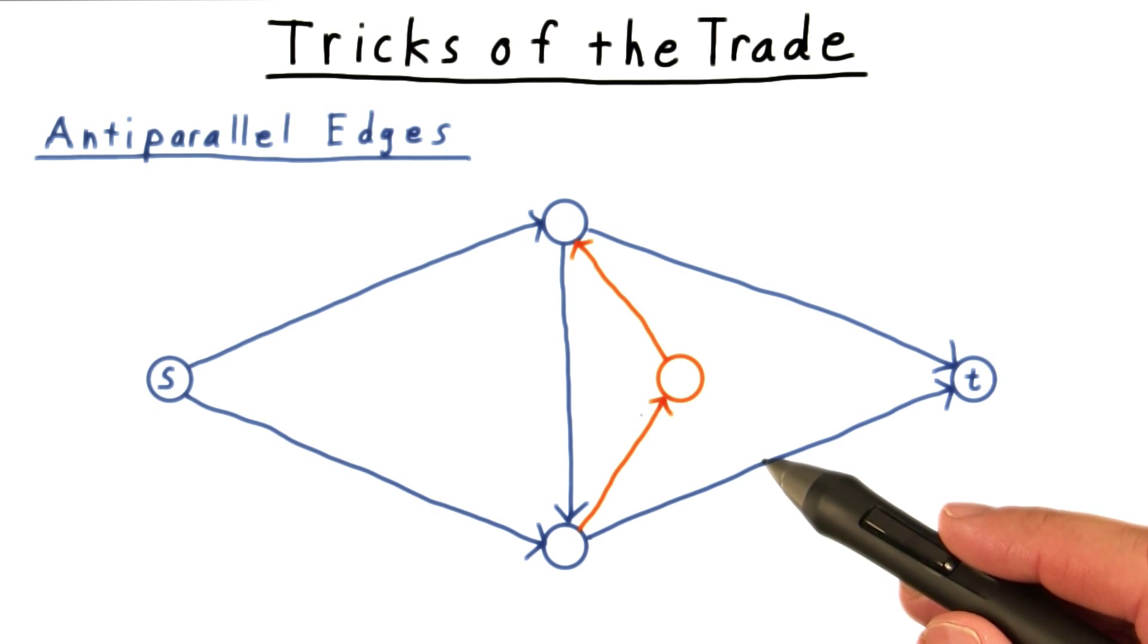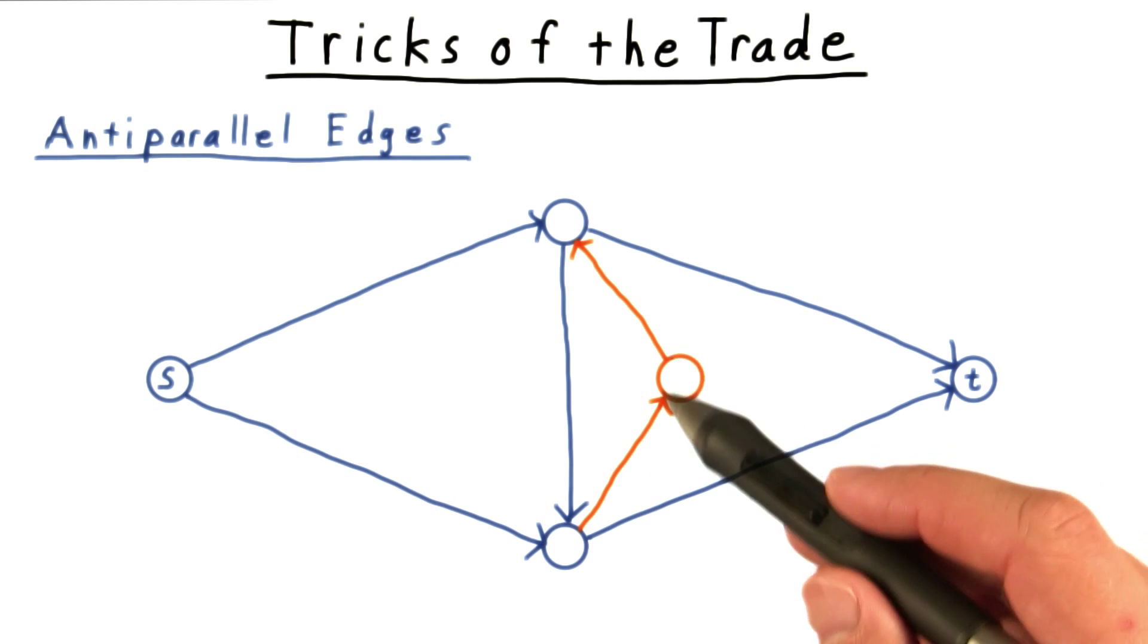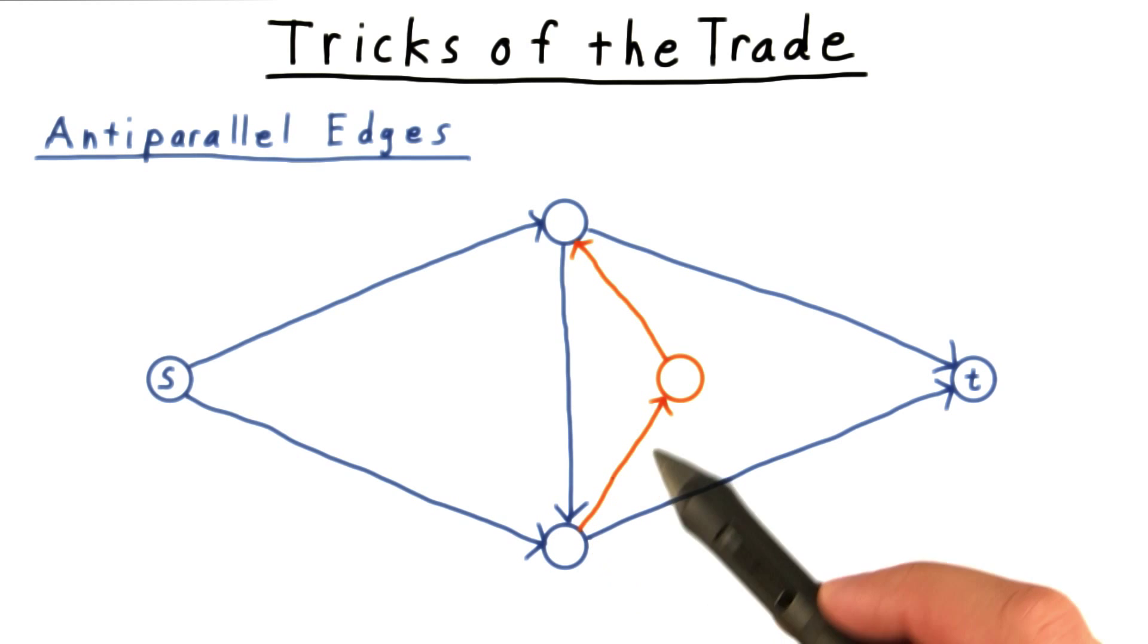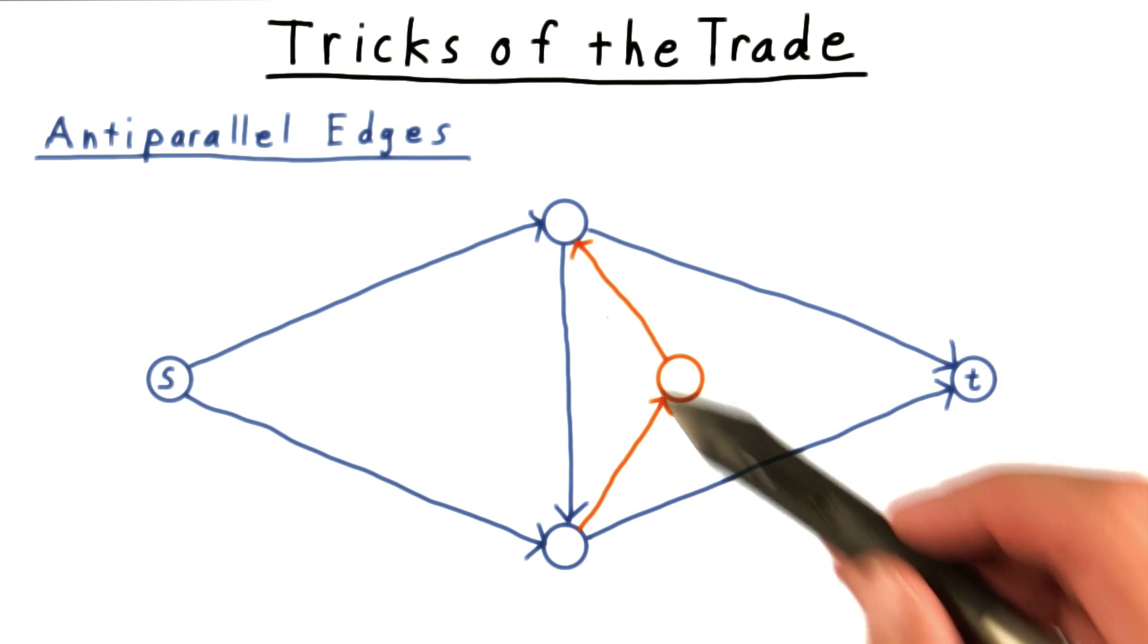Or, just to convince yourself that the theorems still hold, add an artificial vertex between the two nodes and create two edges to simulate a reverse flow in this direction.